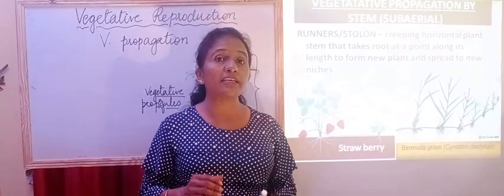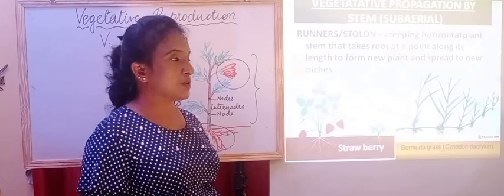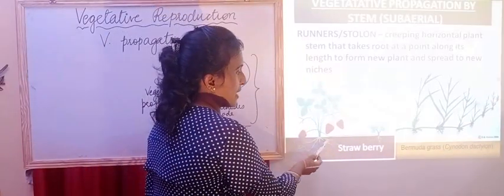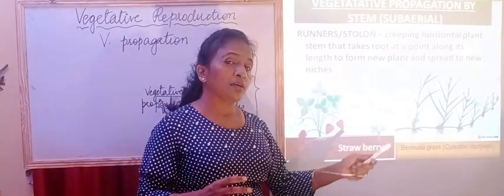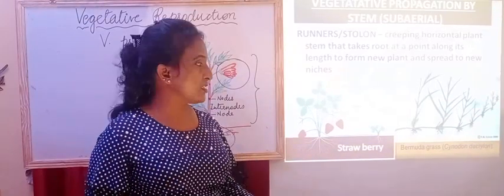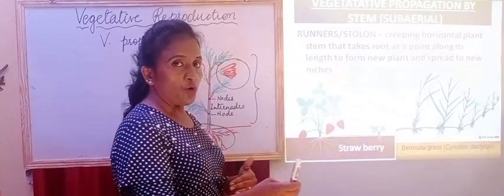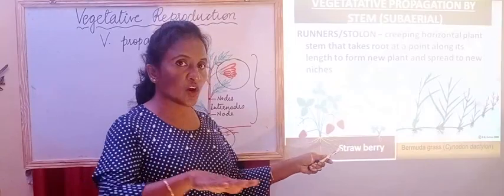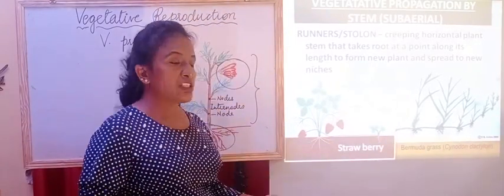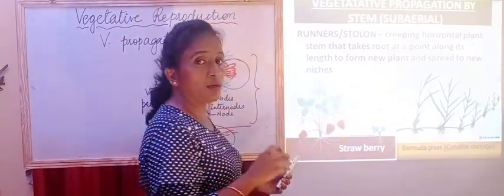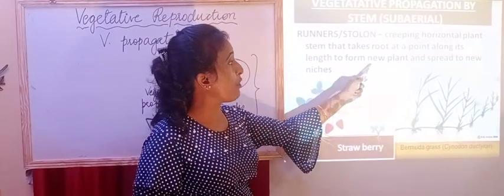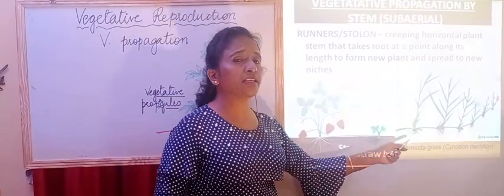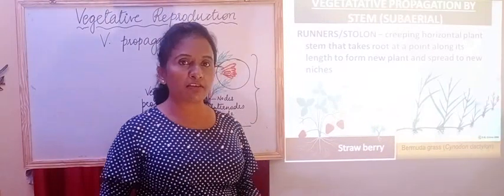Now comes vegetative propagation by stem but sub-aerial, that is above the ground. Runners or stolons — examples are strawberry or bermuda grass, which is the long grass found in gardens, scientifically called Cynodon dactylon. They grow vegetatively by runners or stolons. The horizontal stem creeps along the soil surface, and at the nodal region there will be roots as well as small plantlets which arise. The main plant even if it dies, the other plantlets will survive because of this propagation.